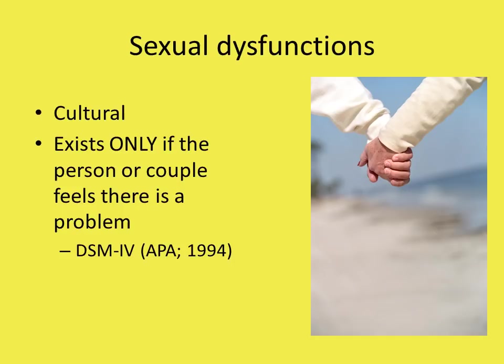Sexual dysfunctions are defined by a society or social group, so there isn't just one definition that applies to everybody worldwide. For example, in our society, premature ejaculation is considered some type of dysfunction. Typically, it's about five to ten minutes from insertion of the penis to orgasm in vaginal intercourse, but in many cultures the typical time is one minute.